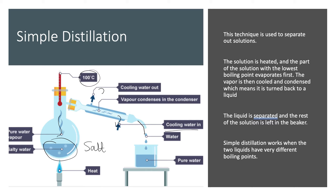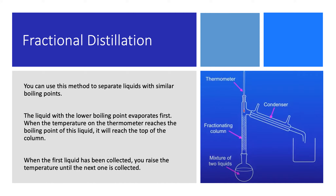Moving on to fractional distillation. You can use fractional distillation to separate out liquids with similar boiling points. The liquid with the lower boiling point evaporates first, and when the temperature on the thermometer reaches the boiling point of this liquid it will reach the top of the column. Once the first liquid has been collected you can raise the temperature until the next one evaporates as well.